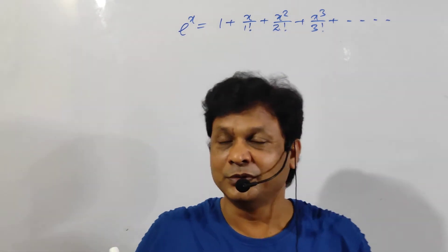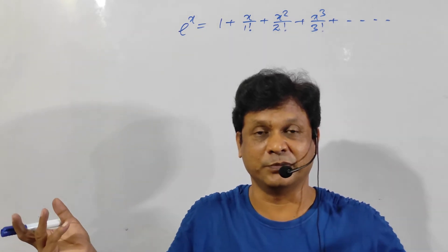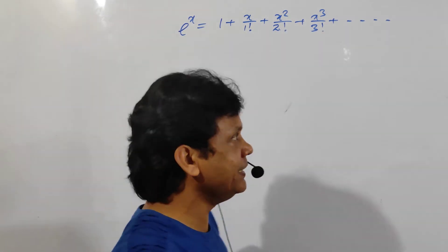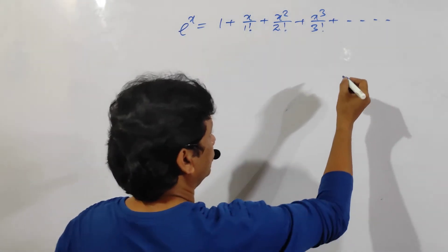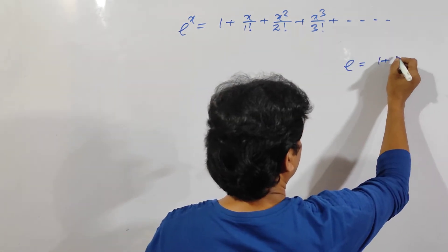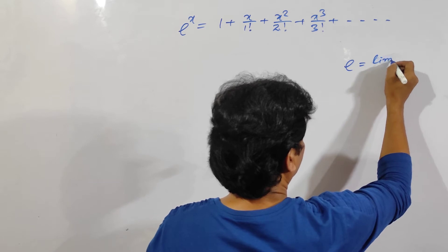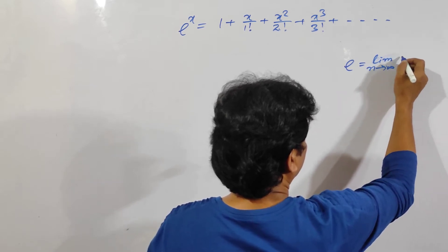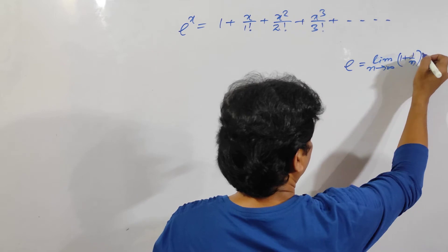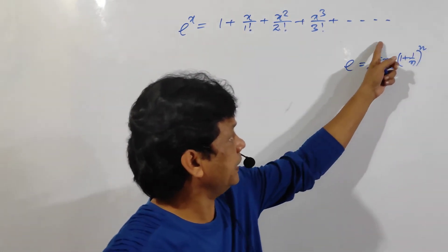So now I am going to prove this formula. How it is going to be — e is equal to, I have already proved, e is equal to limit n tends to infinity of 1 plus 1 by n to the power n. So this is e.